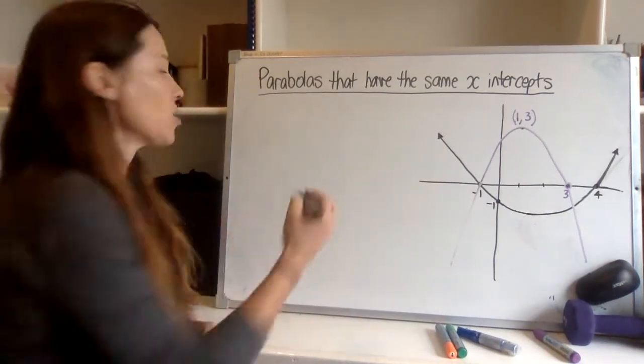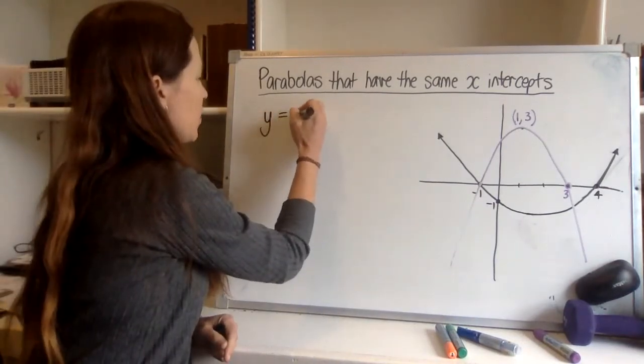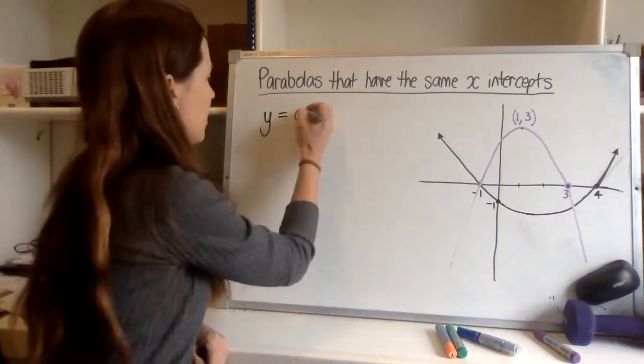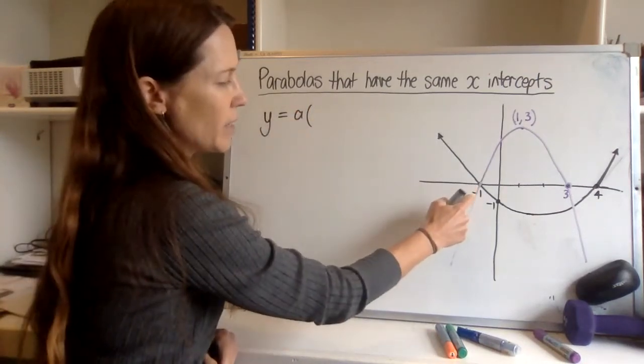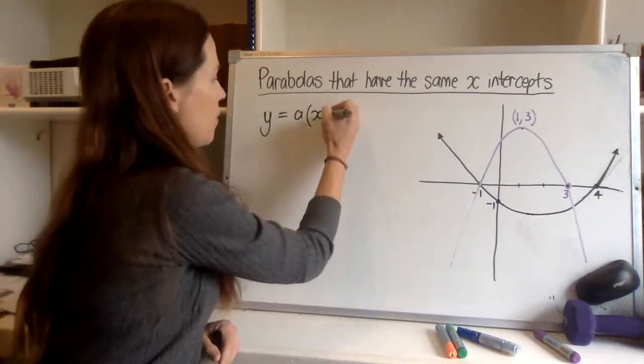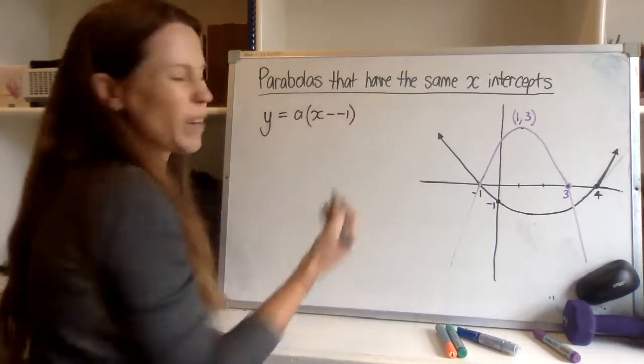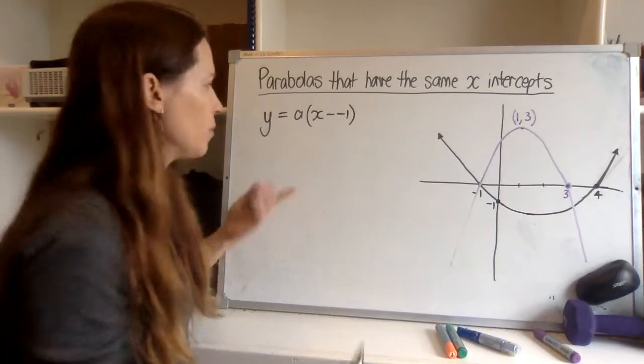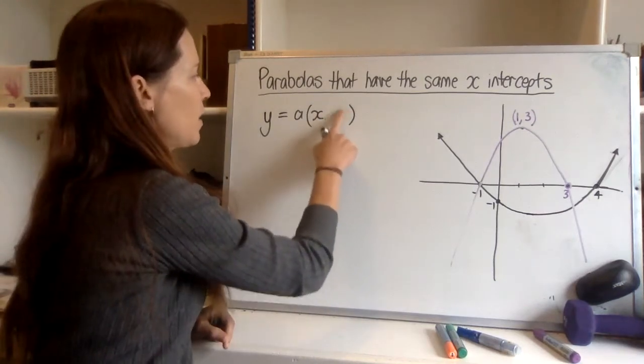Now we can see that it's an upright parabola so we're expecting a to be positive. That's something we can think through but let's just write down the basic form first. We don't know what a is so just put it down, but we know that we've got an x-intercept at negative one. Now you can either write down I've got x minus negative one, or as you're going to write that you can say oh minus negative one, that's plus one, and just put that down straight away.